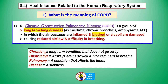The word 'chronic' means a long-term condition that does not go away. 'Obstructive' means that the airways — such as the bronchi and bronchioles in the respiratory system — are narrowed and blocked, either by mucus or by swelling of the walls of the bronchial tubes, leading to difficulty in breathing. 'Pulmonary' means a condition that affects the lungs, and 'disease' is a sickness.